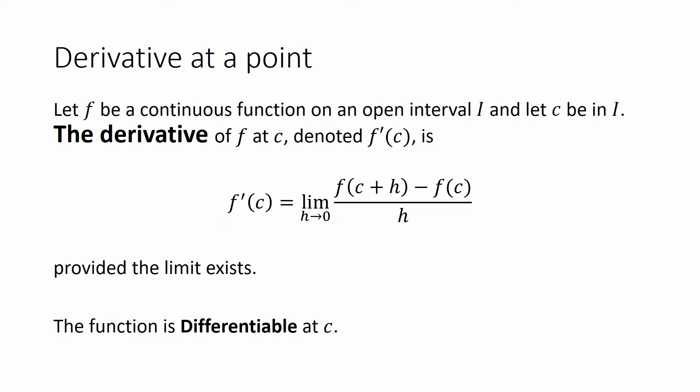We have to allow h's to be positive and negative values. There are certain functions where this limit would not exist, but as long as that limit exists, then that's the derivative. And if we can find a derivative, we say the function is differentiable at c. So having a derivative at c is the same thing as being differentiable at c.